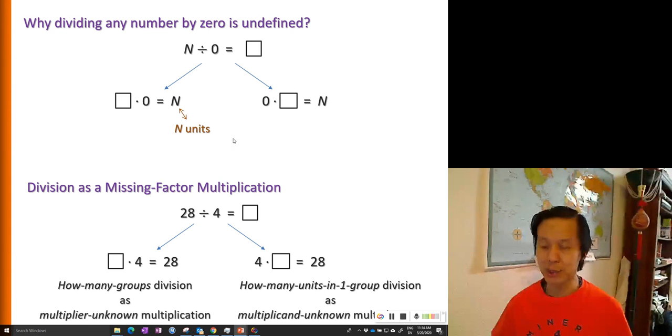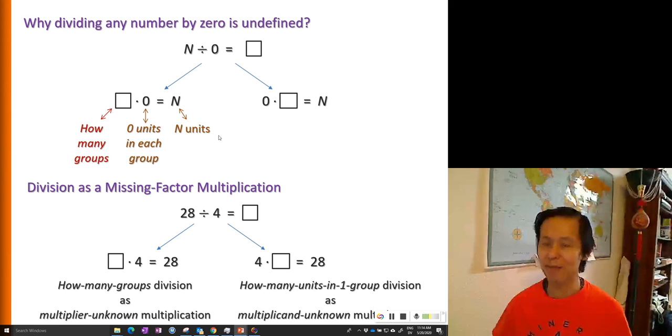Here we want a total of N units, and we know that there are zero units in each group. So no matter how many groups you have, it's just not possible. Because anything times zero is zero. So even if you have a billion groups and each of these billion groups has zero units, you still have zero.